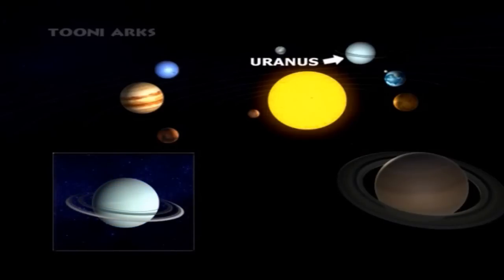Uranus is the seventh planet from the Sun and the third largest and fourth most massive planet in the solar system. It is named after the ancient Greek deity of the sky, Uranus. Uranus was also the first planet discovered with a telescope.